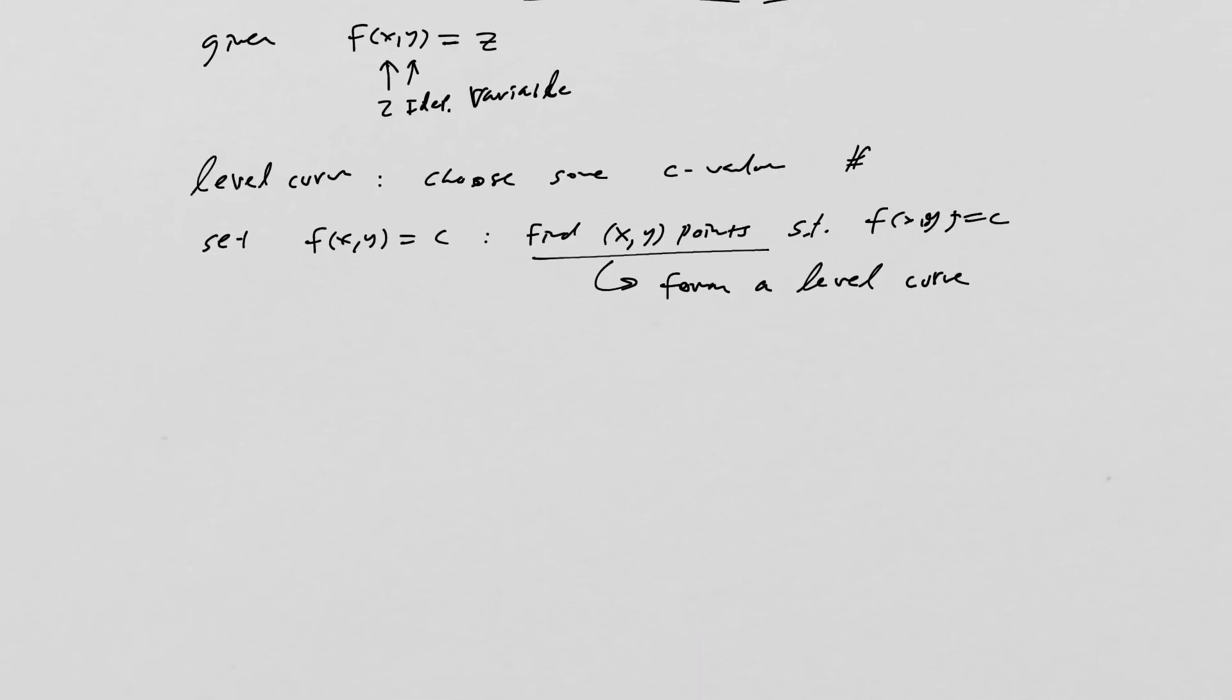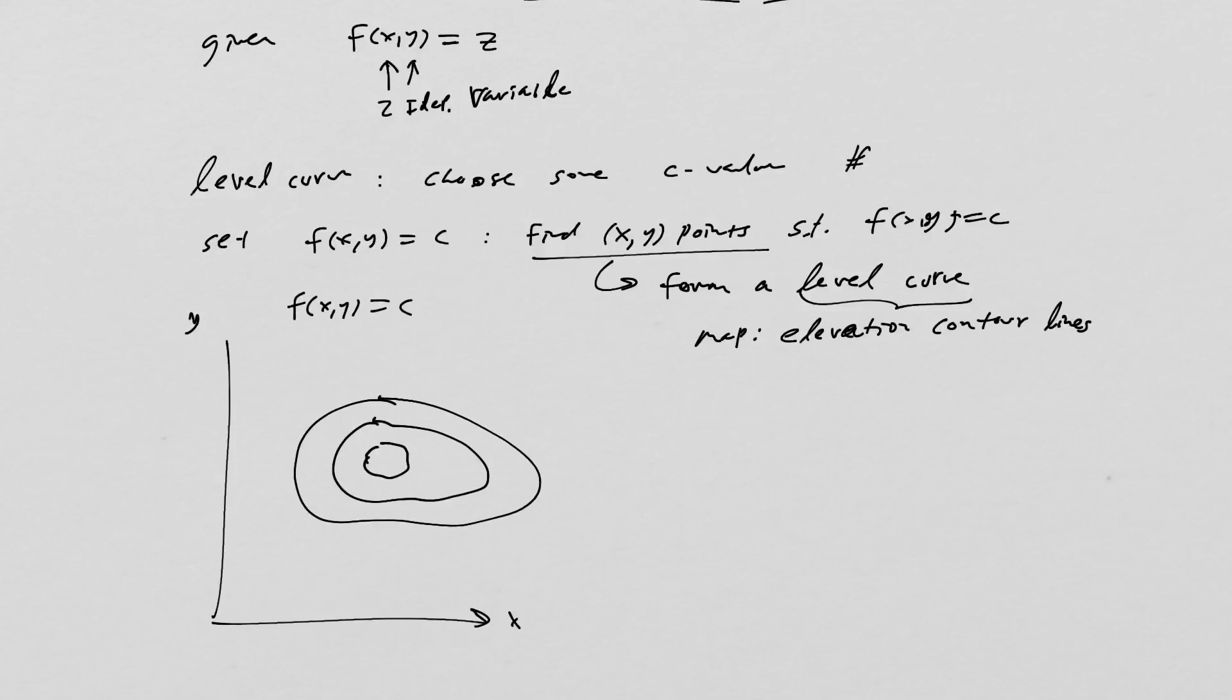So let's talk about that. Oftentimes what we call a level curve, if you were looking at a map, that would be the elevation contour lines. So what we'd have here is something like this. Here's x and here's y. And maybe this is like a mountain.